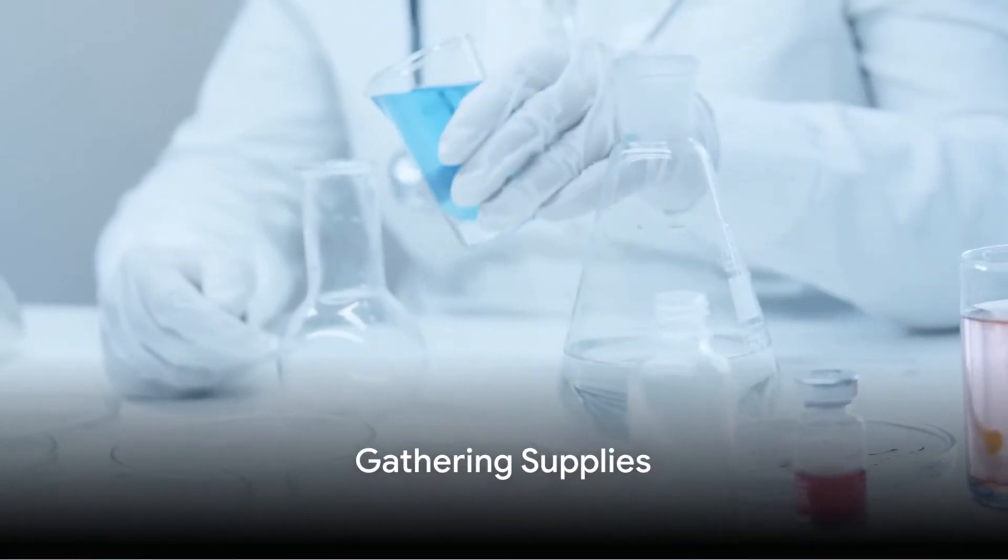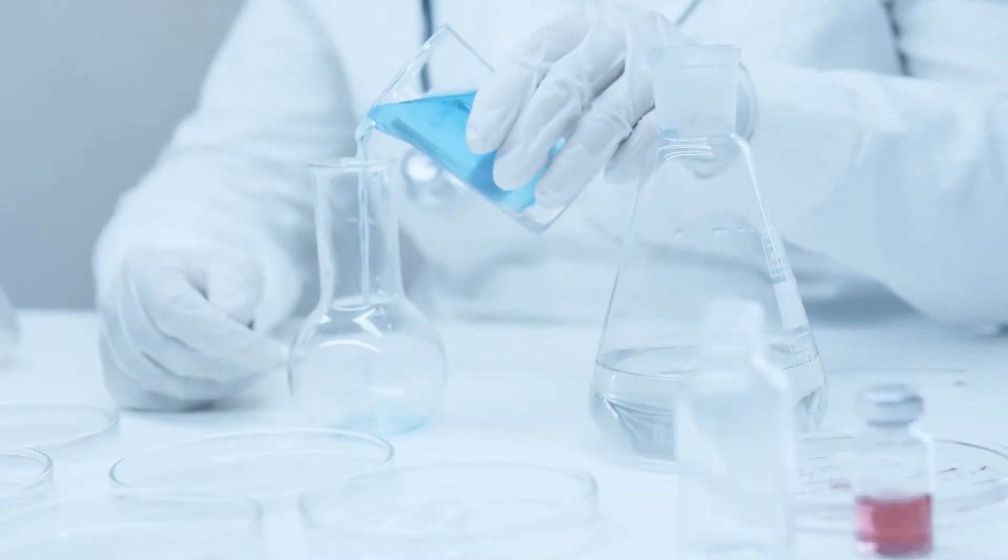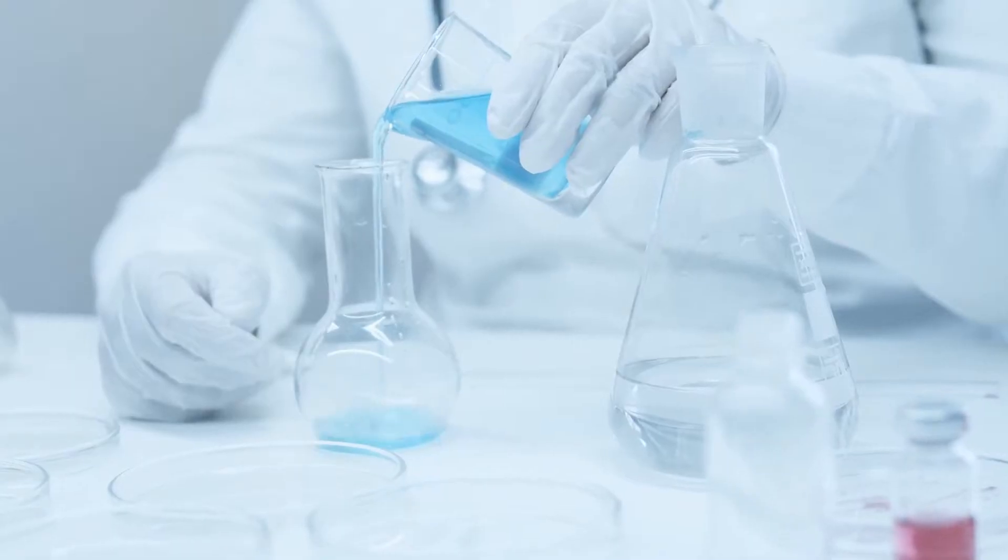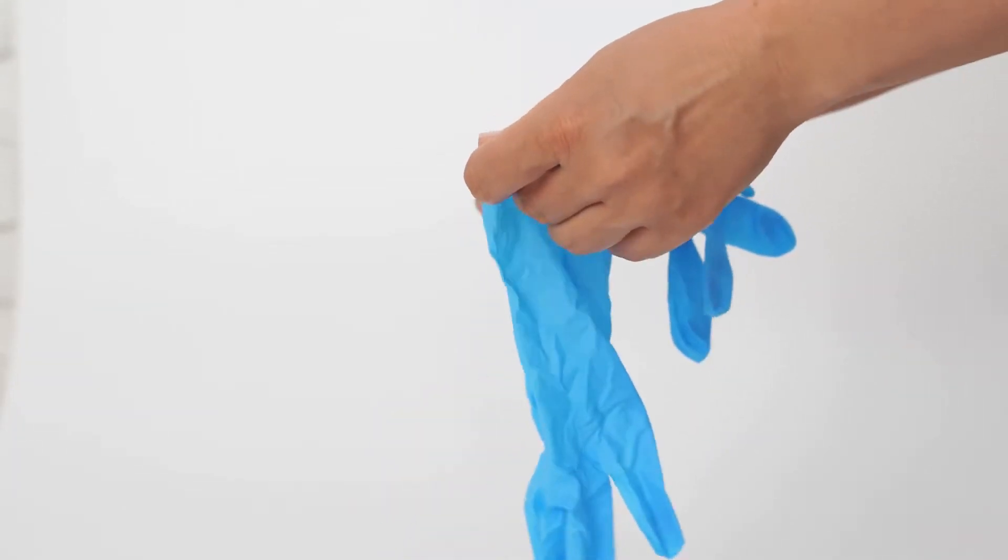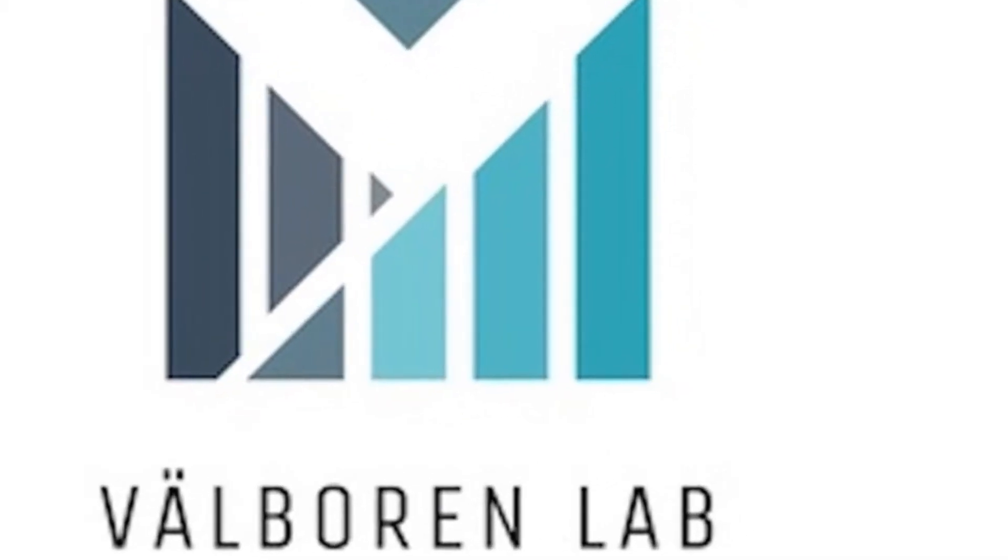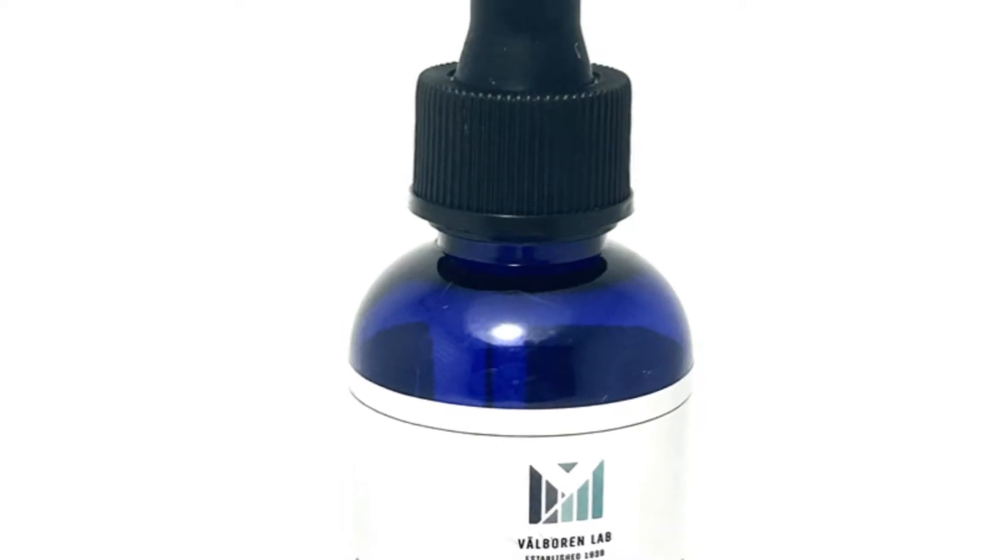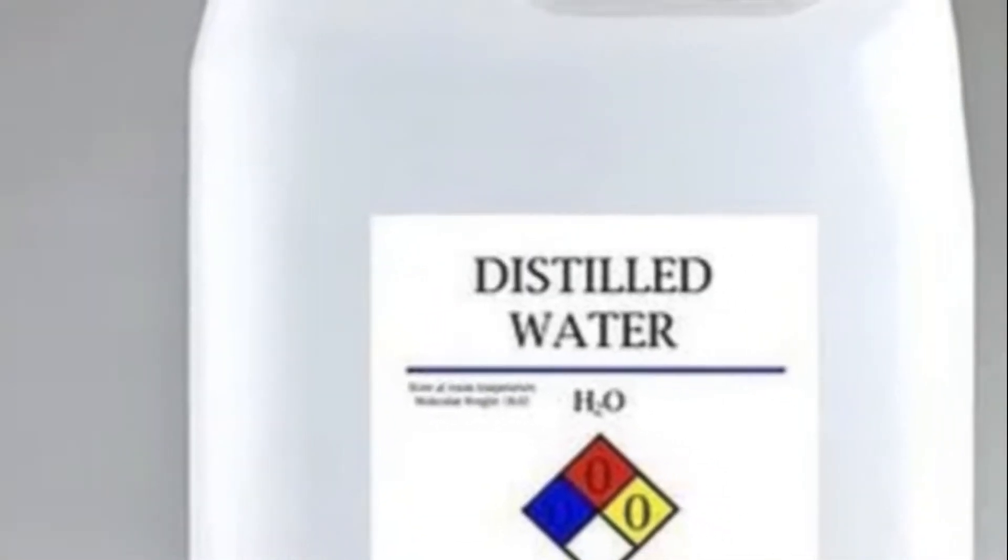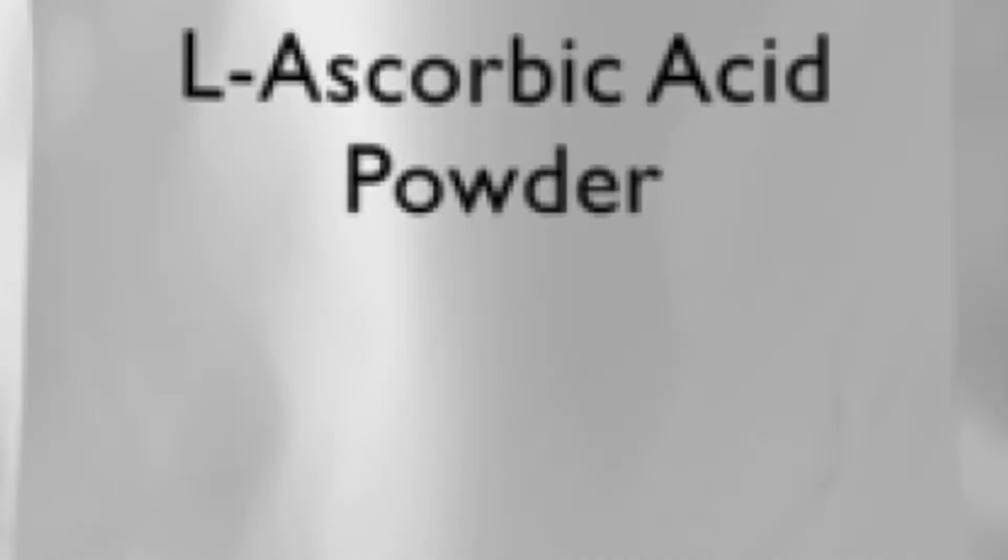Before you start preparing your Methylene Blue solution, you will need the following supplies: disposable gloves, Methylene Blue 1% USP Pharmaceutical Grade High Purity Solution from Valborin Labs, distilled water, ascorbic acid, a clean dry 8-ounce glass, and a 1/16-ounce measuring spoon.